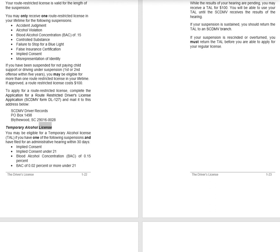Temporary Alcohol License (TAL): You may be eligible for a TAL if you have one of the following suspensions and have filed for an administrative hearing within 30 days: Implied Consent, Implied Consent under 21, Blood Alcohol Concentration (BAC) of 0.15%, or BAC of 0.02% or more under 21. While the results of your hearing are pending, you may receive a TAL for $100. You will be able to use your TAL until the SCDMV receives the results of the hearing. If your suspension is sustained, you should return the TAL to an SCDMV branch. If your suspension is rescinded or overturned, you must return the TAL before you are able to apply for your regular license.